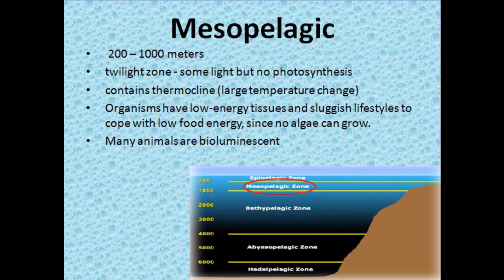The mesopelagic zone is the next 200 to 1,000 meters. It's also called the twilight zone because sunlight can penetrate but there's no photosynthesis. This zone contains a thermocline, which is a large temperature change. Organisms that live here have low energy tissues and sluggish lifestyles to cope with low food energy since no algae can grow. Many of the animals are bioluminescent.